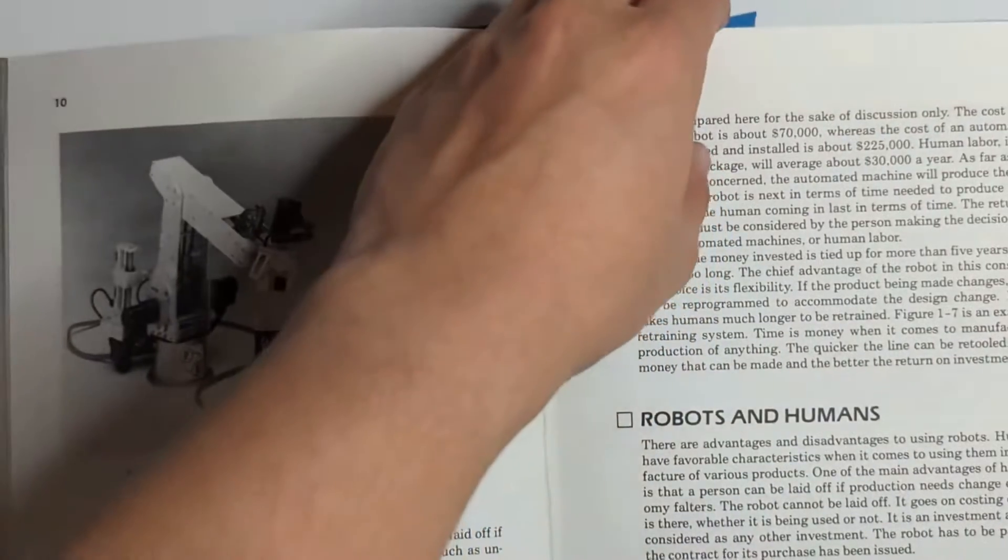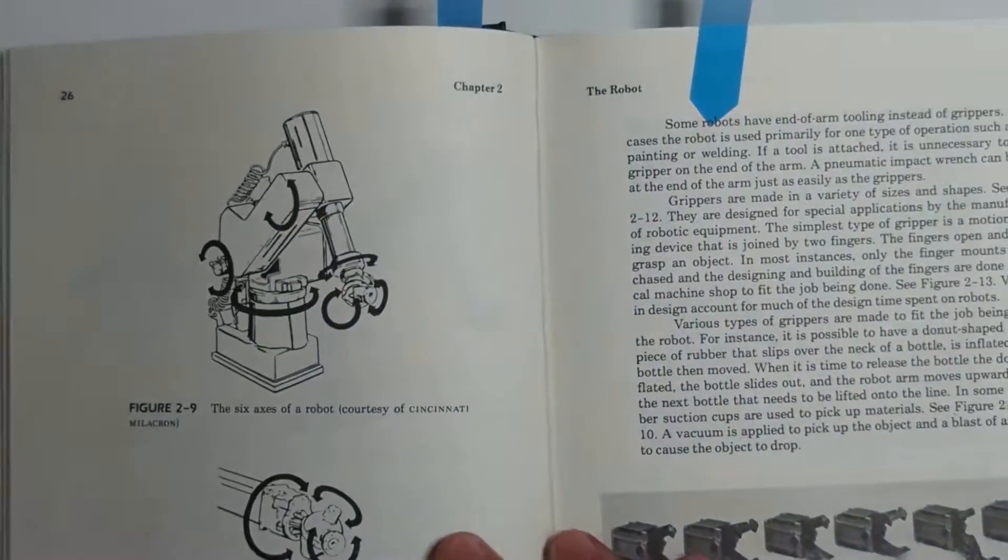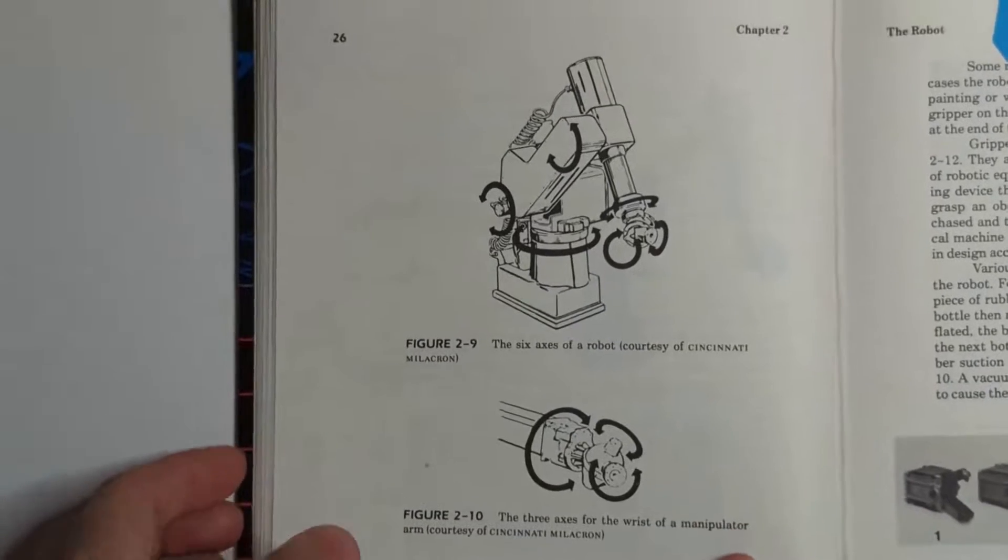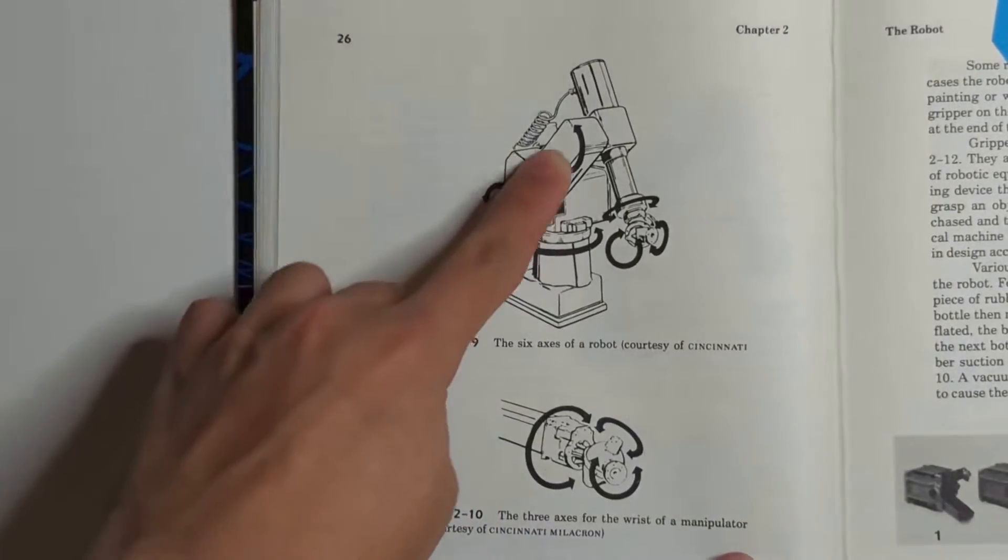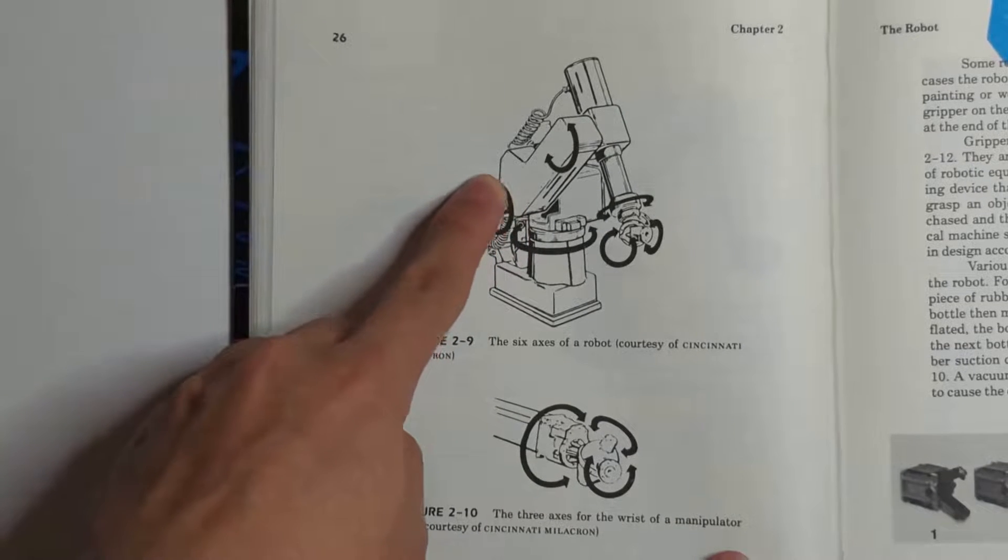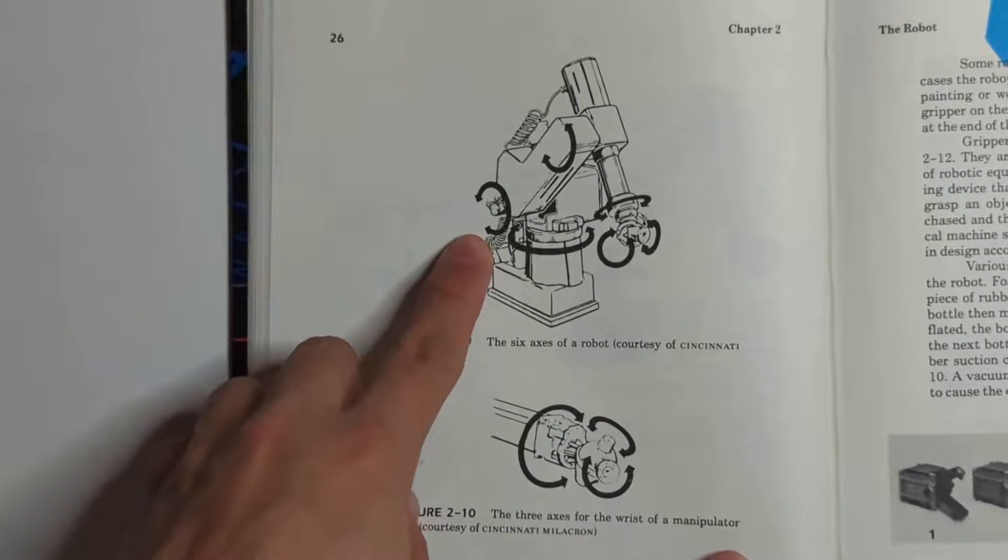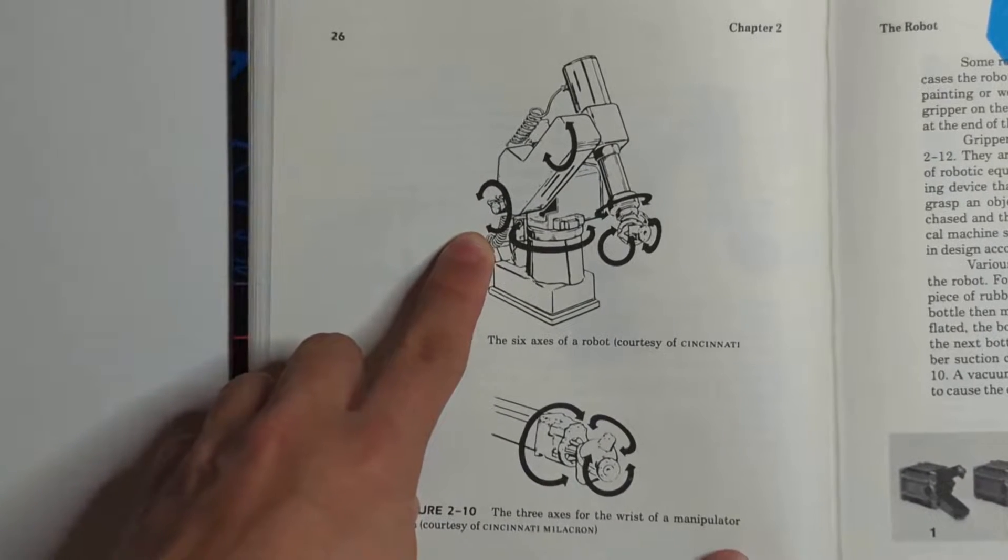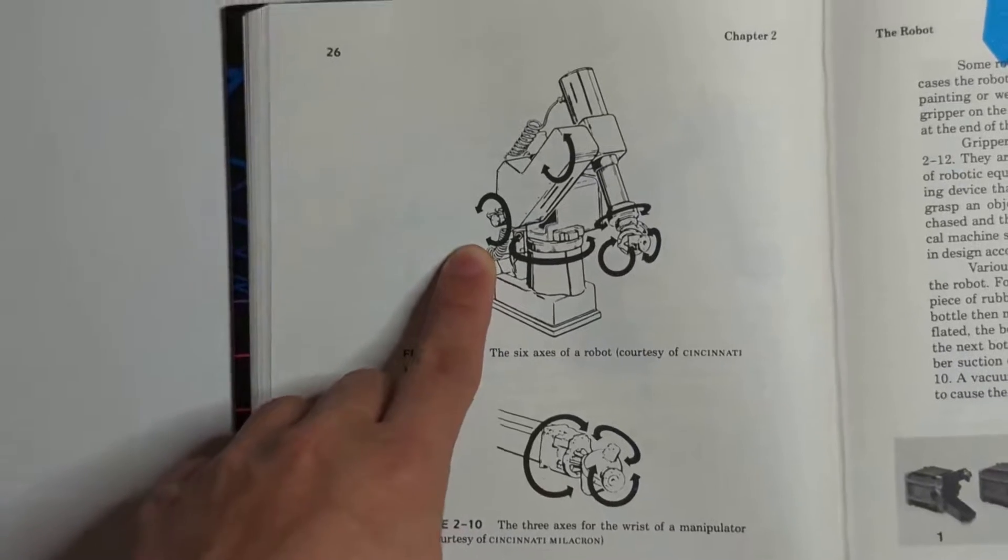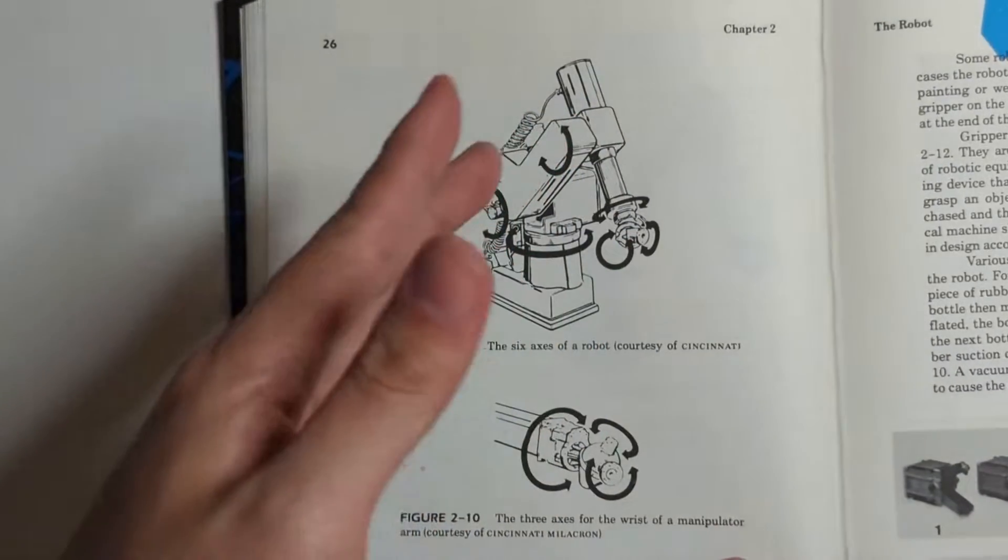This is achieved by basically adding in these motors here in between these joints and this motor can accurately control their own angle, speed, you name it, to emulate all the freedom axes of a human arm.